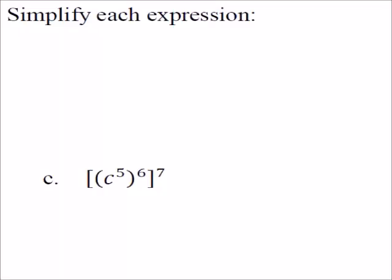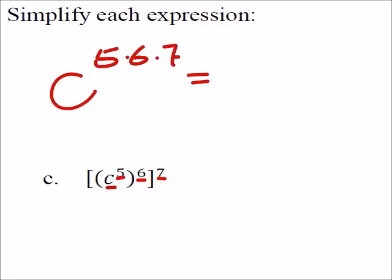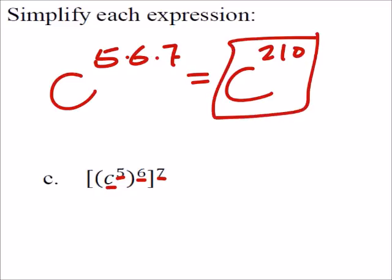On this one we're just going to apply the rule. We have the comet base C. Here it shows that we have six groups of five and seven groups of that. So we've got five times six times seven, which would end up being C to the power of 210. That one would really suck to expand.